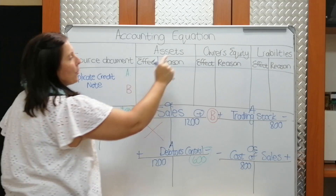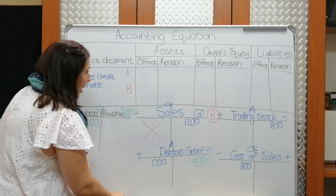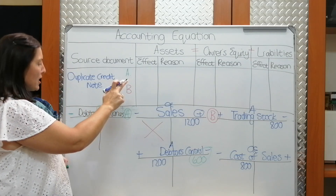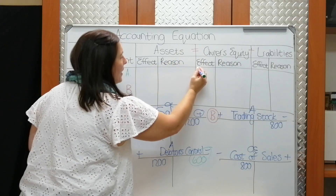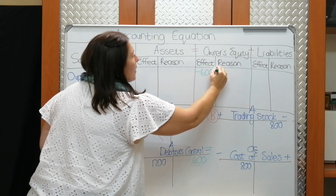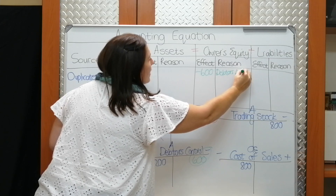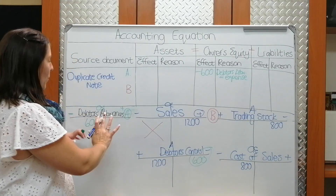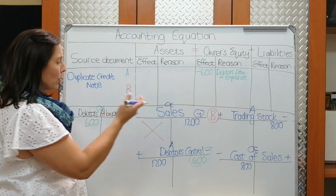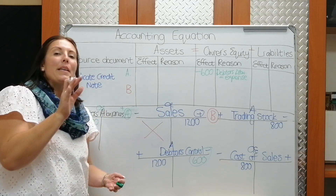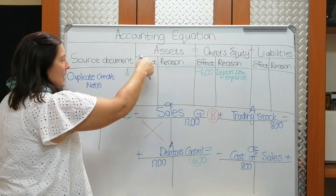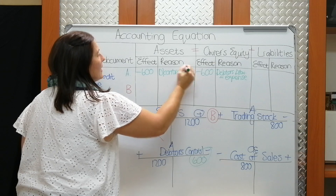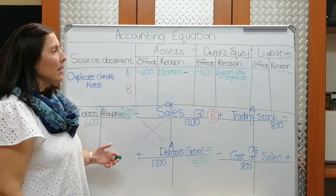Let's record the A-part in the accounting equation. Remember: assets equals owner's equity plus liabilities. Debtors allowances is an owner's equity expense — it decreases owner's equity — so under owner's equity I write minus 600 Rand, reason: debtors allowances — an expense. Next, debtors control is an asset. The debtor owes me less; we credited debtors control, so under assets: minus 600 Rand, reason: debtors control decreased. Nothing happened to liabilities.